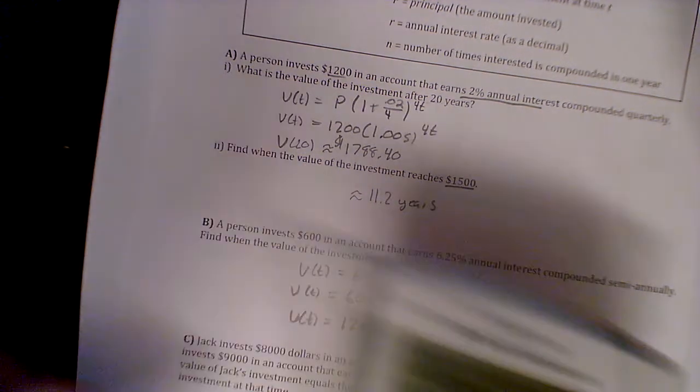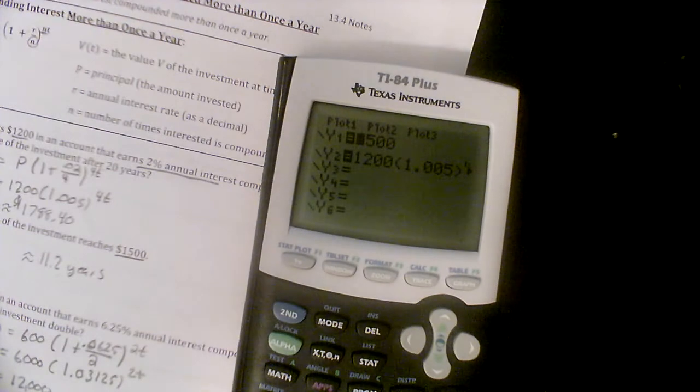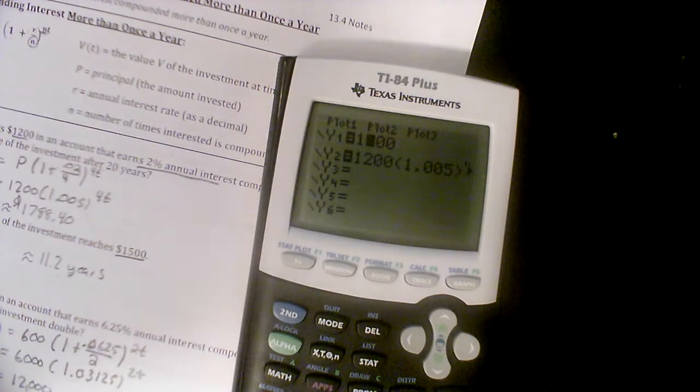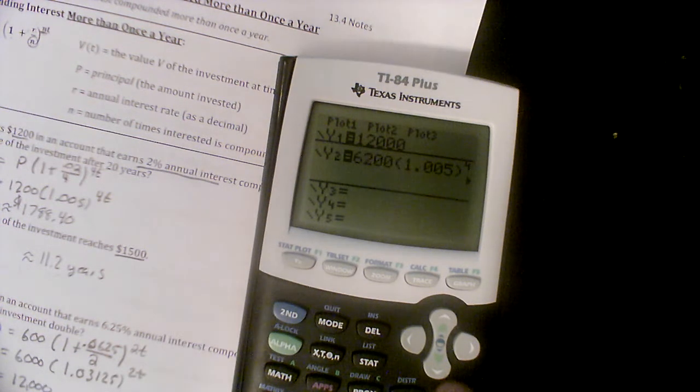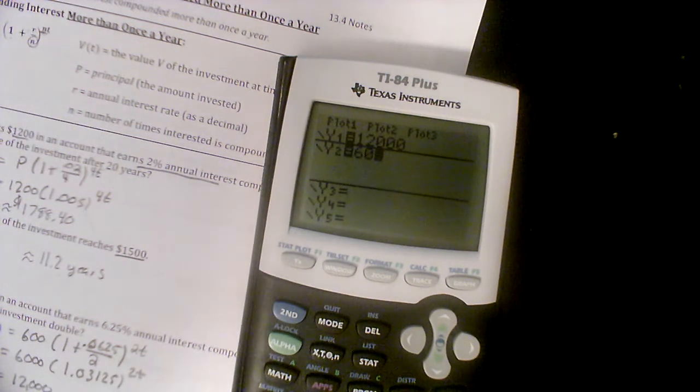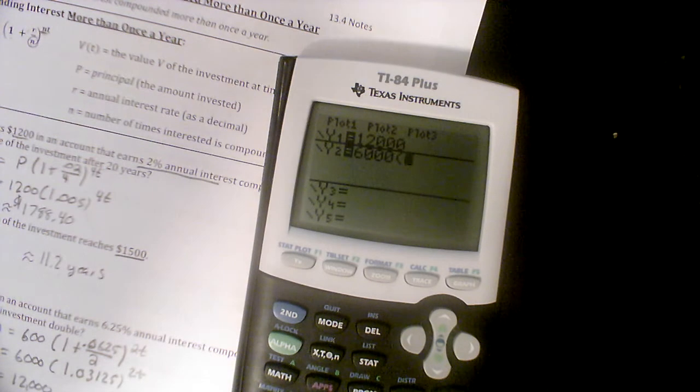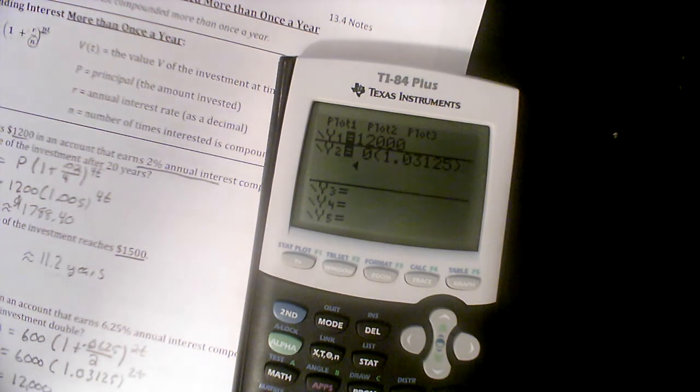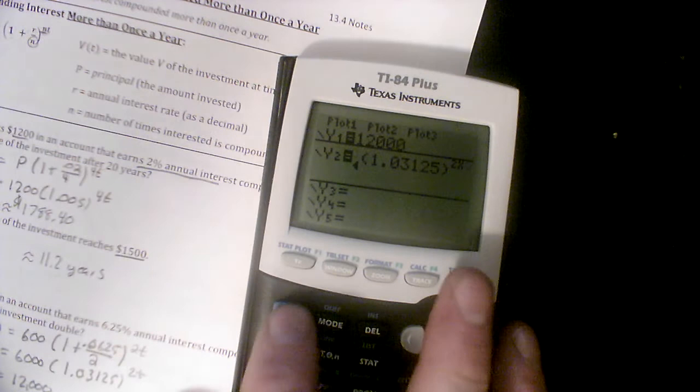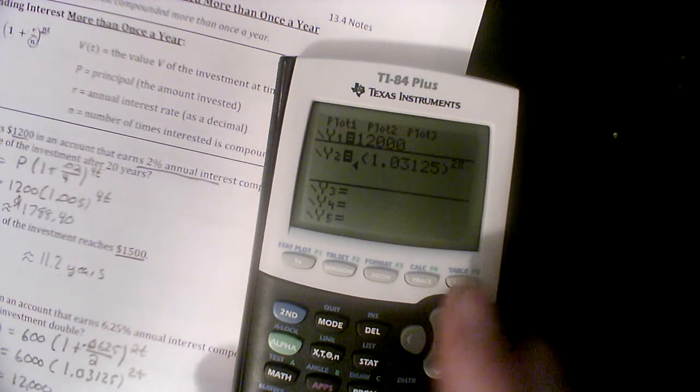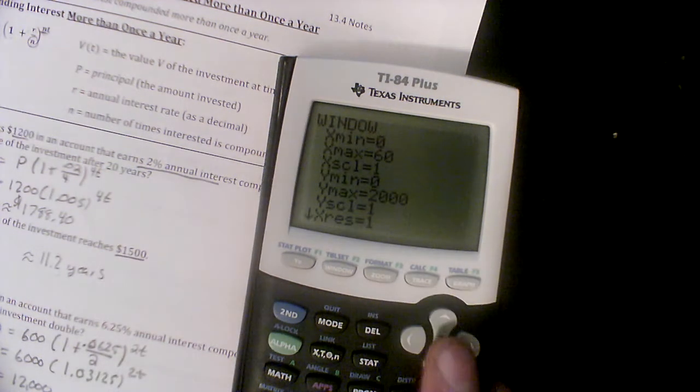We want to find out when V(t) doubles. We'll double $6000, that's $12,000. So here we go, I'm gonna set them both up. Let's start with $12,000 right here. And this one's gonna be $6000. Let's clear it off. $6000 times 1.03125 raised to the 2x power. And let's graph it and see if we get it right.